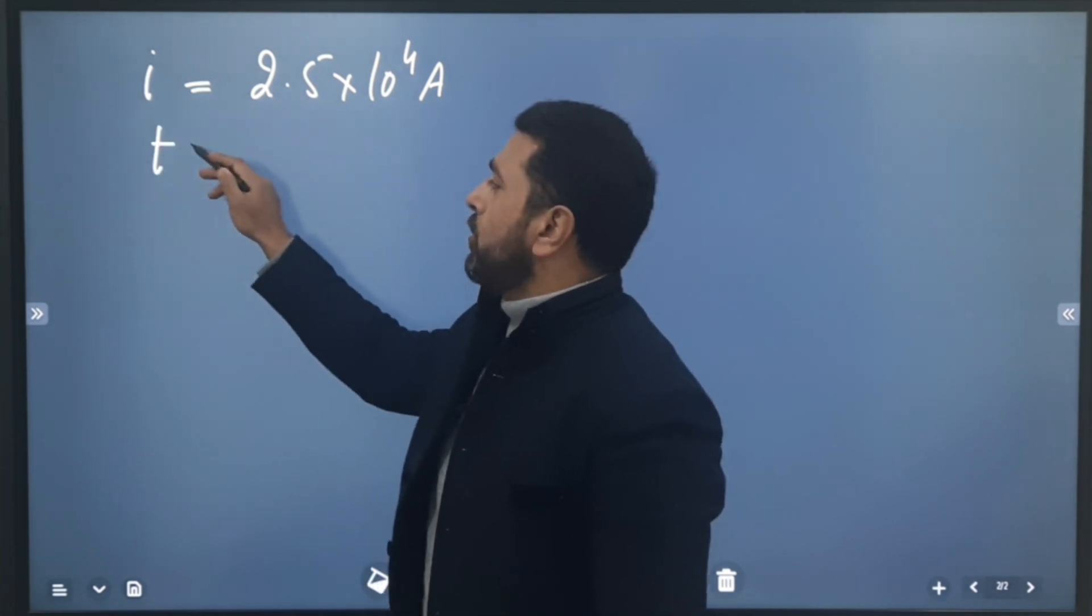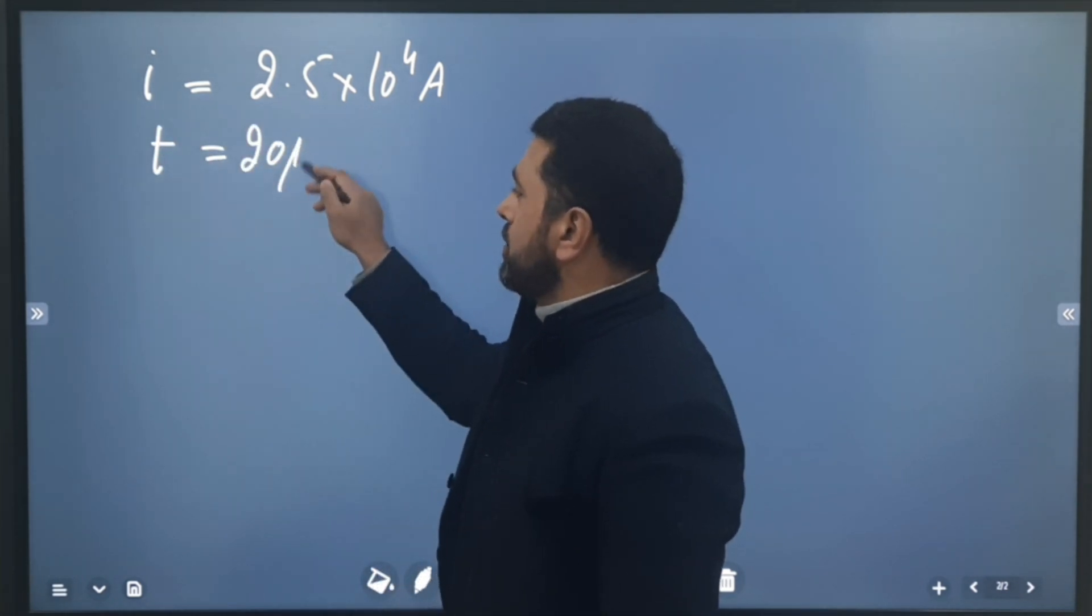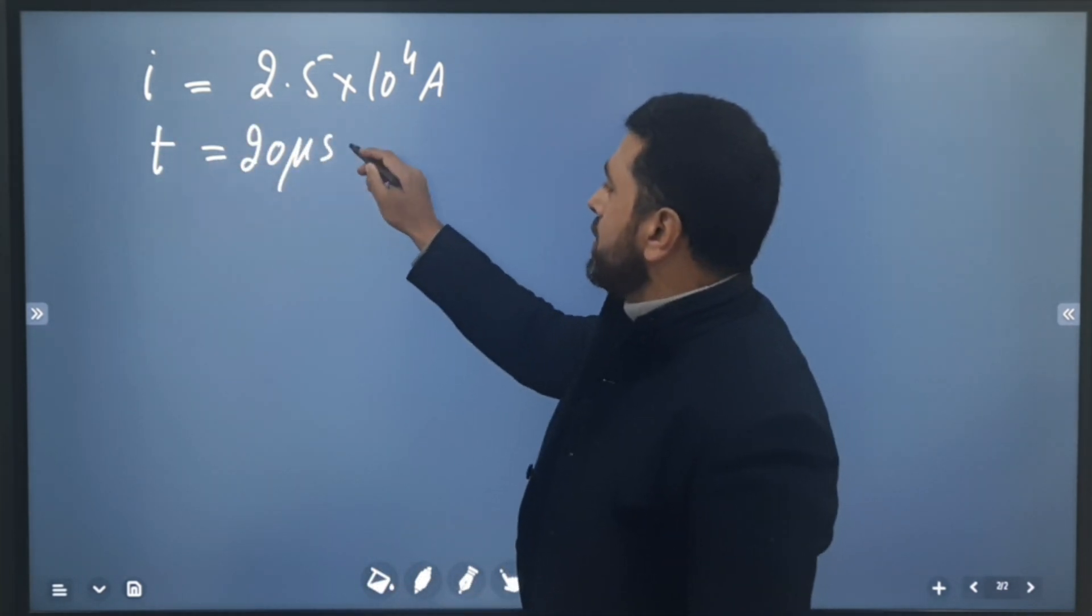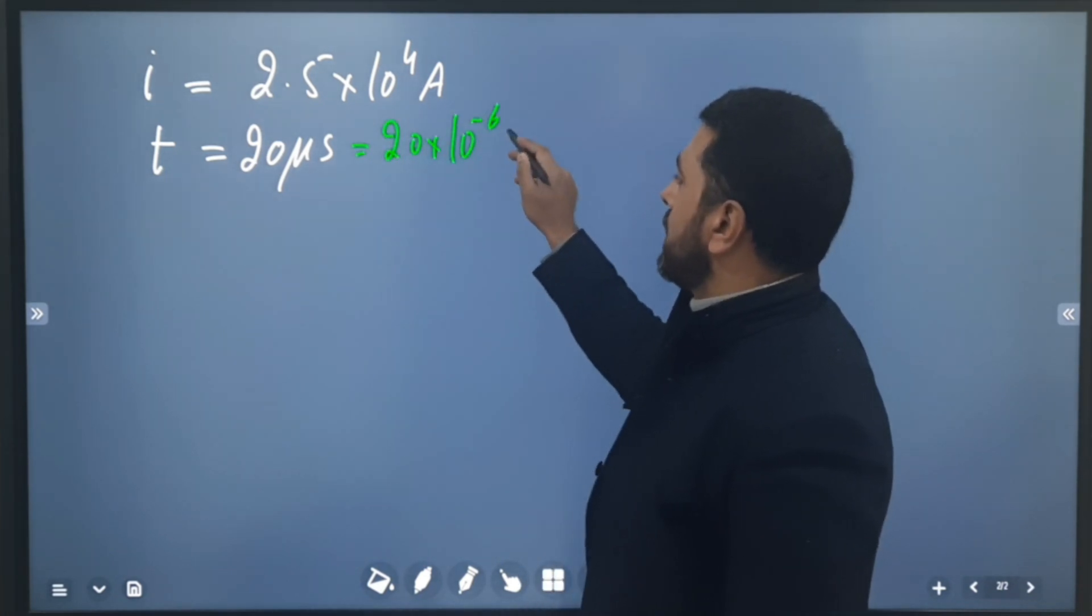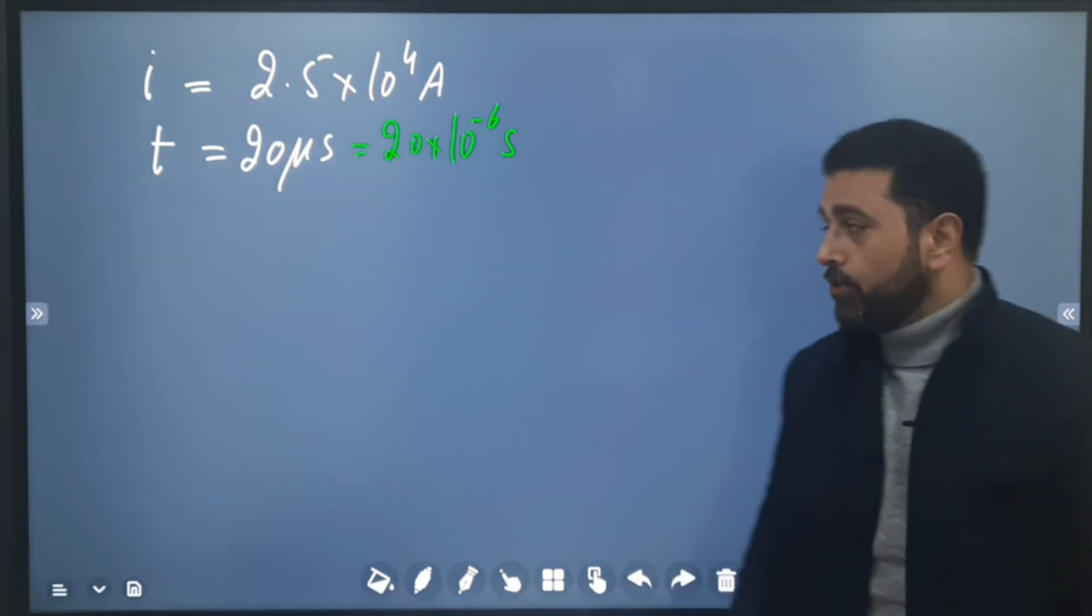And this current lasts for a time of 20 microseconds. 20 microseconds means 20×10^-6 seconds. Micro is 10 to the power minus 6.